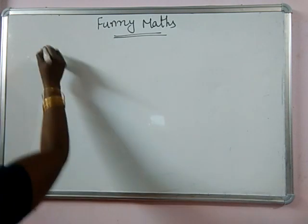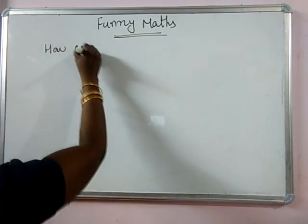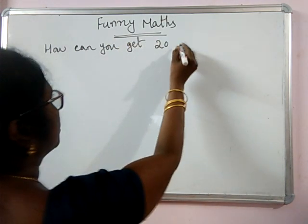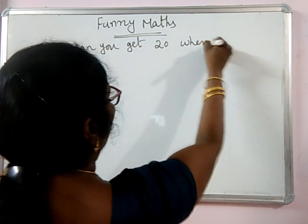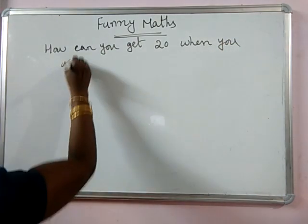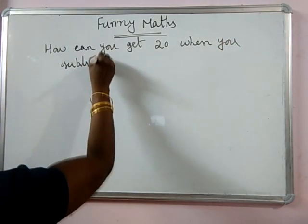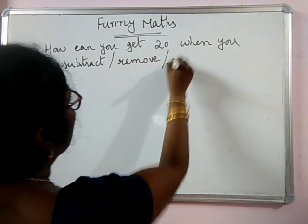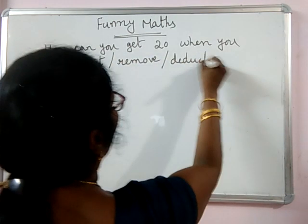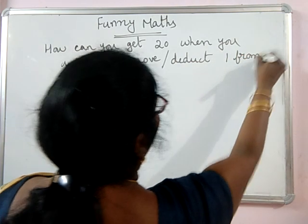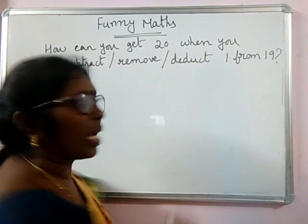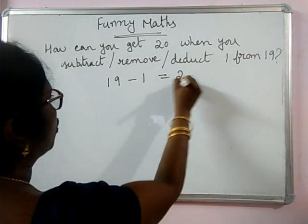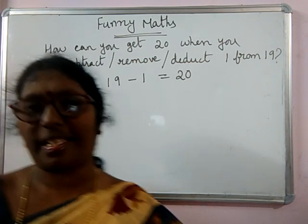How can you get 20 when you subtract — or let me say remove, or let me say delete — 1 from 19? That means 19 minus 1 is equal to 20. How will you be able to get that?